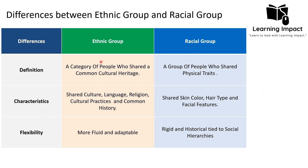The characteristics shared by members of an ethnic group include shared culture, language, religion, cultural practices, and common history. In the case of the racial group, it is skin color, hair type, and facial features which form the basis of the group.